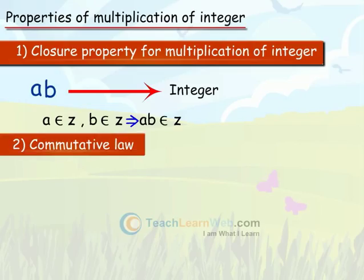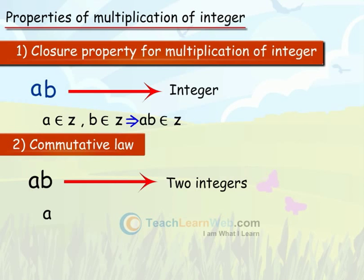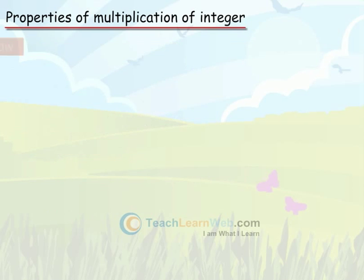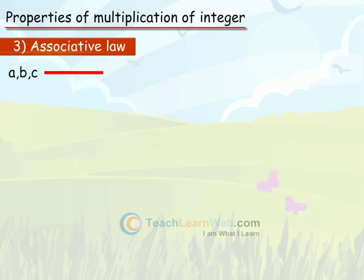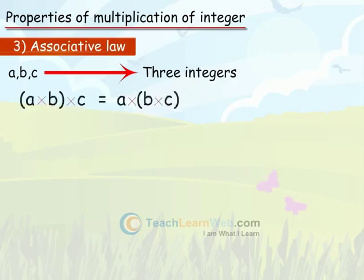Commutative Law: For any two integers a and b, we have a into b equals b into a. Associative Law: For any three integers a, b and c, we have a into (b into c) equals (a into b) into c.